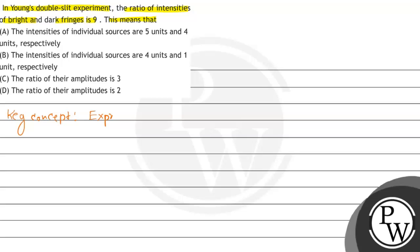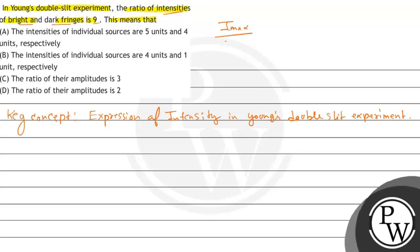The concept here is the expression of intensity in Young's double-slit experiment. We are given that the ratio of intensities of bright and dark fringes is 9. In bright fringes the intensity is i_max, and in dark fringes the intensity is i_min. So basically we are given that i_max by i_min is 9. We know that i_max is equal to (a1 plus a2) squared, where a1 and a2 are amplitudes.